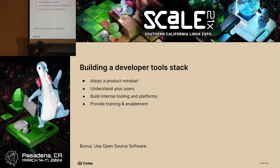Another important point is to provide training and enablement. Team Topologies explains you need two parallel efforts: platform — maintaining tools and treating it like a product — and enablement, which is a service involving workshops and explaining what tools are available. These could be one or two teams. And as a bonus, at an open source conference: use open source software. It's a lot more fun to submit a pull request to fix something versus waiting on a product manager.